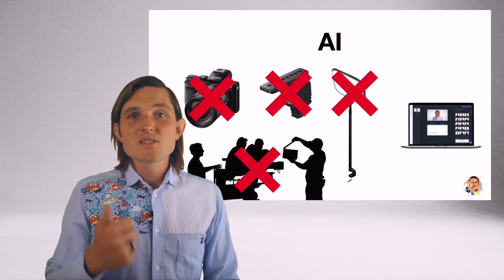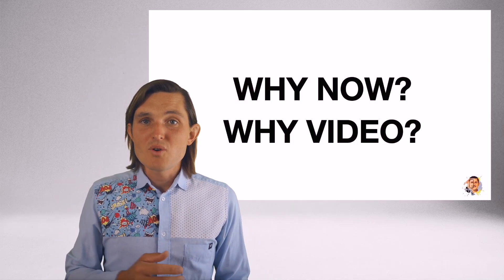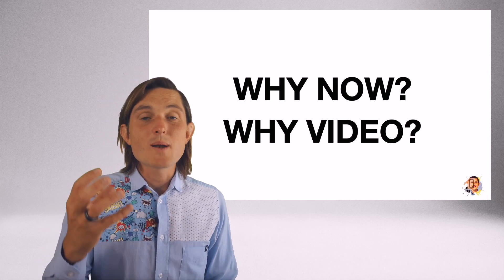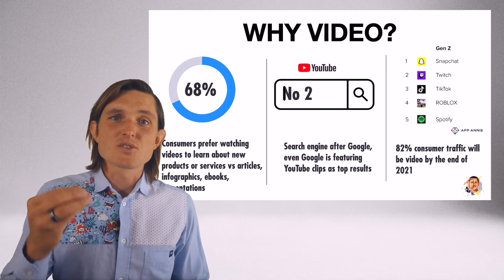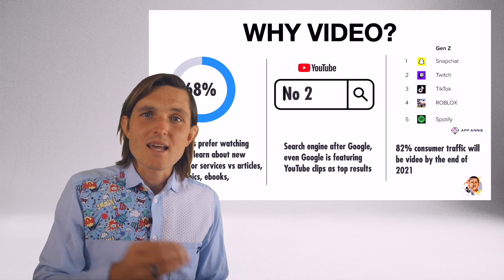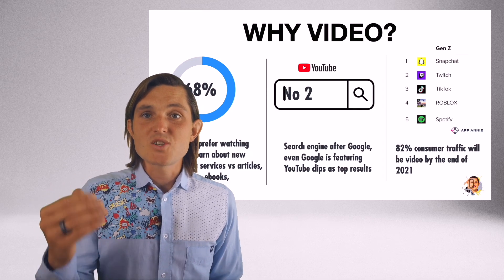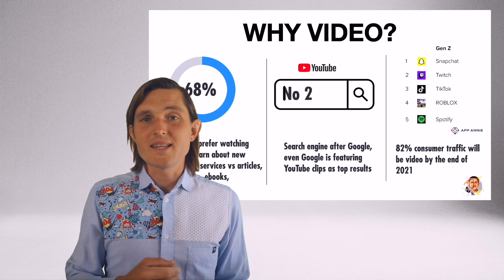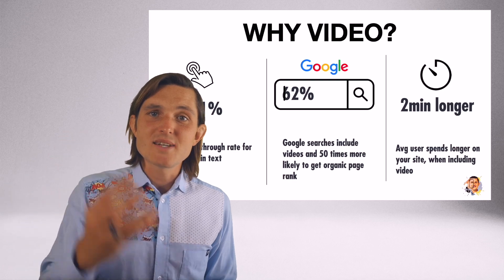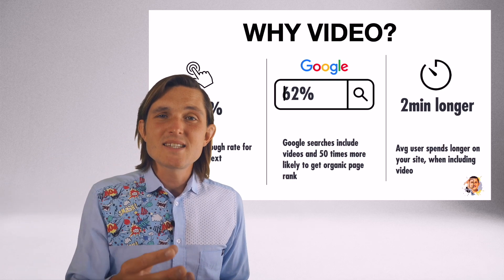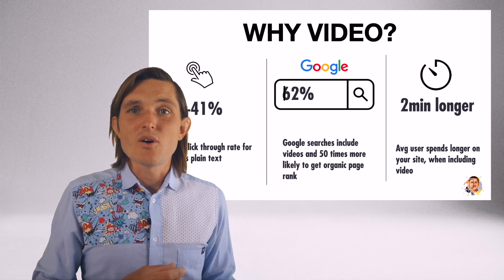And the same thing is happening now in the video world — no need for cameras, microphones, lights, or crews. We can just generate all of that content. But why video? 68% of consumers prefer watching videos instead of reading articles, infographics, or ebooks. That's why YouTube is the second largest search engine, and the top three most popular apps for Gen Z are all video apps: Snapchat, Twitch, and TikTok. Consumer traffic by the end of this year will be 82% video. It also increases click-through rates and Google search exposure, as they include 62% of videos in search results, and people with video on their website spend two minutes longer.